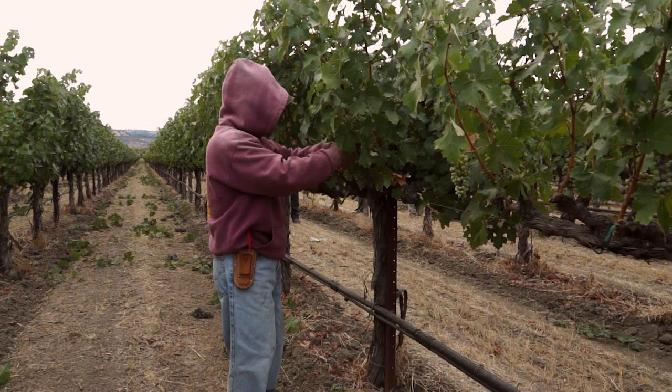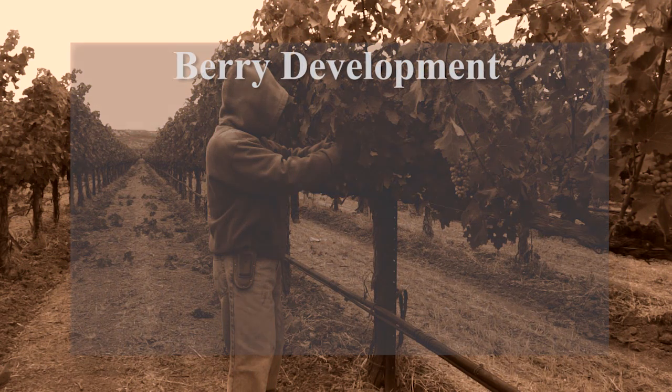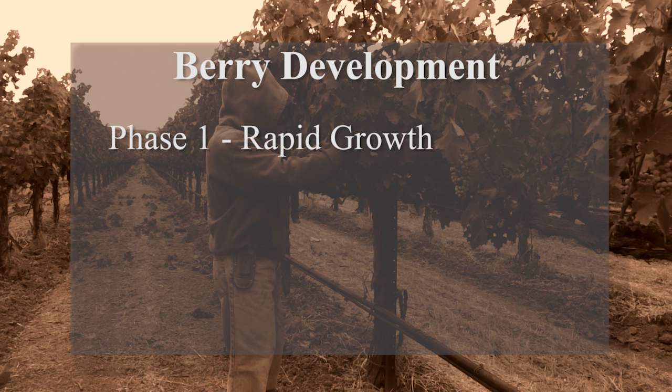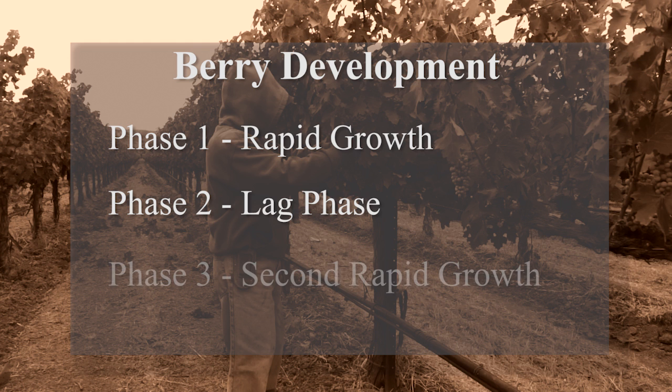Berry development occurs in two phases. After flowering and berry set, the first phase is a period of rapid growth characterized primarily by cell division that is critical in determining final berry size. This is followed by a lag phase with little growth. And then, beginning at veraison, there is a second phase of berry growth characterized by cellular expansion.